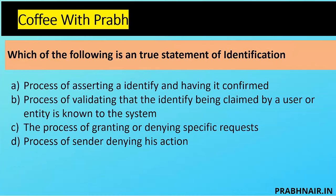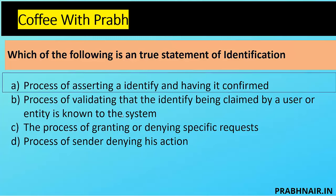Which of the following is a true statement of identification? Option A: process of asserting the identity and having it confirmed. Option B: process of validating that the identity being claimed by the user is known to the system — that's the definition of authentication. Option C: process of granting or denying specific requests — that's authorization. Option D: process of sender denying action — that's non-repudiation. So the answer is A. Do let me know how you find these videos, and share your comments. If you haven't subscribed, please subscribe and click the bell icon. Cheers, happy learning.